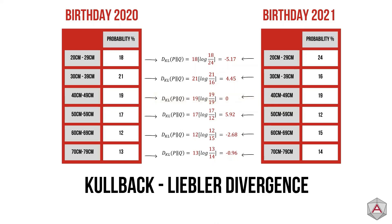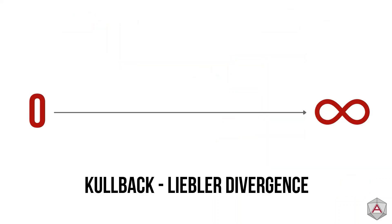Now we want the KL divergence of the entire column, not just the individual boundaries. To do this, we simply sum up all the individual KL divergence values. And there we have it — 1.56 is our Kullback-Leibler divergence of the height of presents between 2020 and 2021. Since KL divergence is a scale between 0 and infinity, the closer our value is to 0, the more similar our datasets are.